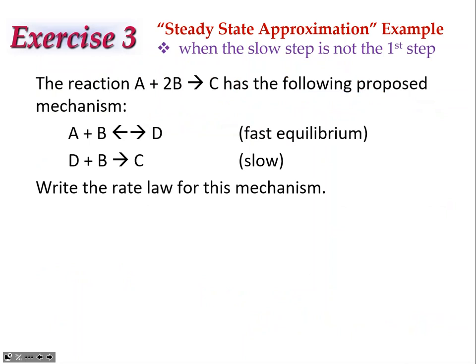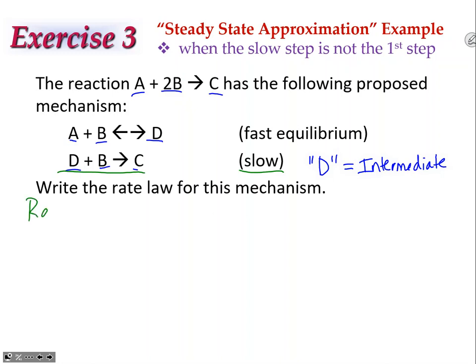We have a reaction A + 2B → C with a proposed mechanism. We want to write the rate law. The D's cancel out — D is identified as an intermediate — so the mechanism does agree with the overall balanced reaction. However, the slow rate-determining step gives a rate law of rate = k[D][B], but we've already identified D as an intermediate, which we're not allowed to have in our overall rate law.